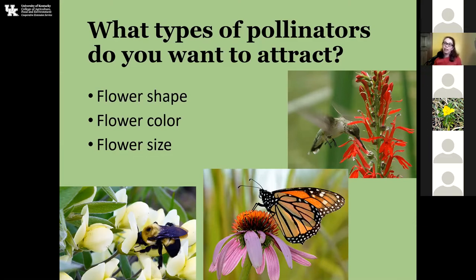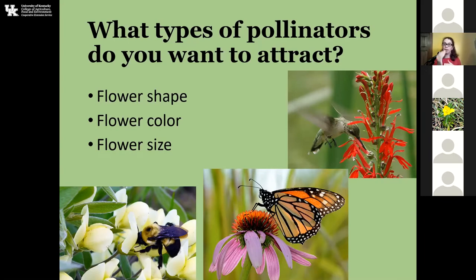Those are the types of things to keep in mind: flower shape, flower color, and also flower size. If you're looking primarily to attract butterflies, butterflies like to have a nice landing platform — something they can come in, land, and move around on. Like a coneflower or a plume of goldenrod — they can land, walk around, and drink out of all the flowers. That's the type of shape you're wanting for the flower head to attract butterflies.